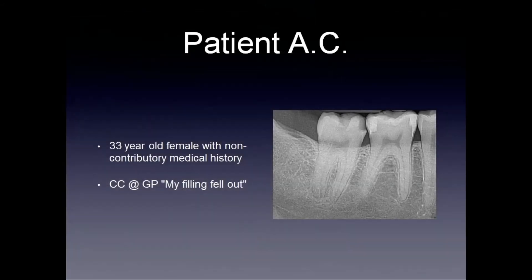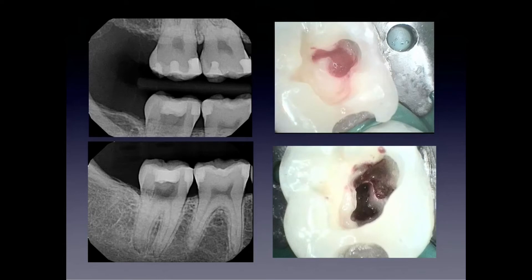The second case I wanted to present today is a 33-year-old female with a non-contributory medical history. Her chief complaint was that the mesial aspect of her composite on her tooth 47 broke or fell out, so she was in for a simple repair — it was an MO restoration. This radiograph was taken after the occlusal aspect was removed as well. In removing the composite, the GP noticed a pulpal exposure, or what they thought was a pulpal exposure, and it was very shallow — less than one and a half millimeters in depth.